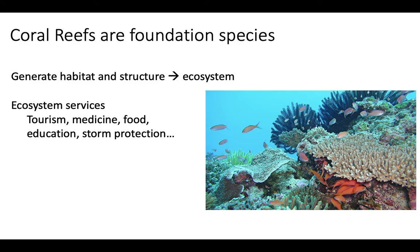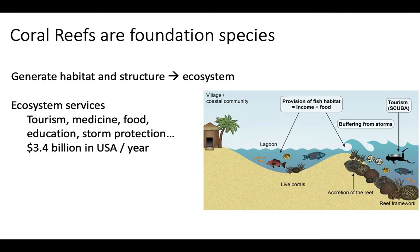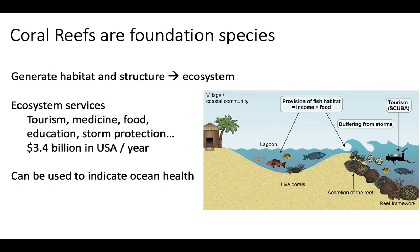Corals provide a wide variety of ecosystem services, including tourism, medicine, food, education, and storm protection. They are worth about $3.4 billion per year in the U.S. from storm protection, tourism, income, and food from fish. There are a lot of reasons to protect coral reefs, even if we're just looking at economics rather than stewardship of the earth. Because they are foundation species, corals can also be used as indicator species to reflect the health of the ocean. Unfortunately, they are experiencing massive die-offs globally.